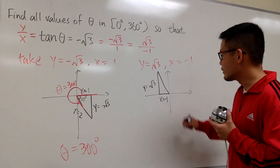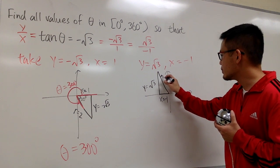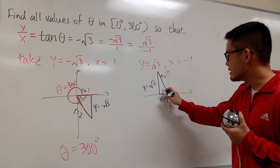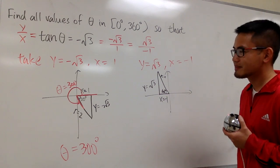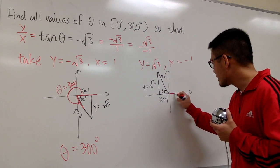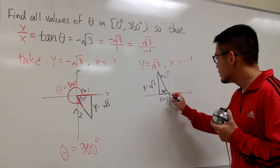30-60-90 special right triangle. Again, this is going to be r = 2, but it doesn't really matter that much. This right here is 60 degrees. The deal is, you have to measure the angle from the positive x-axis to the terminal side. So you go from here to here.